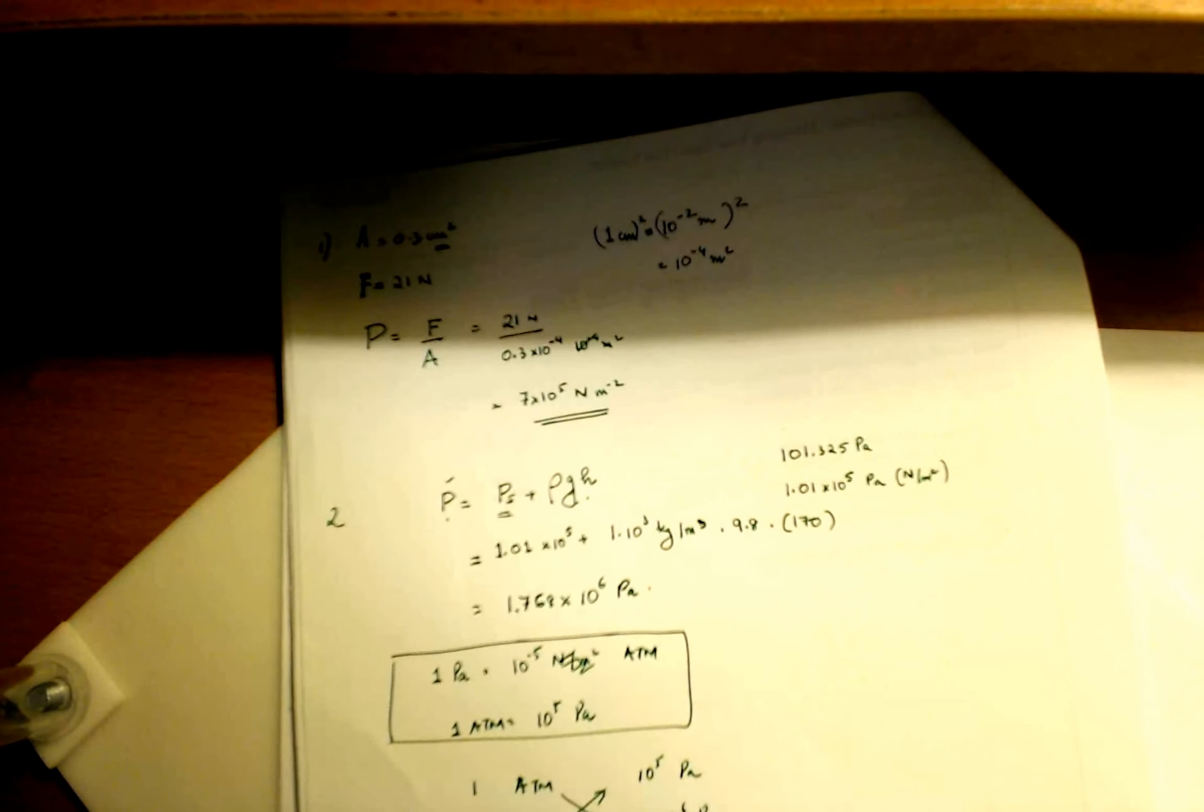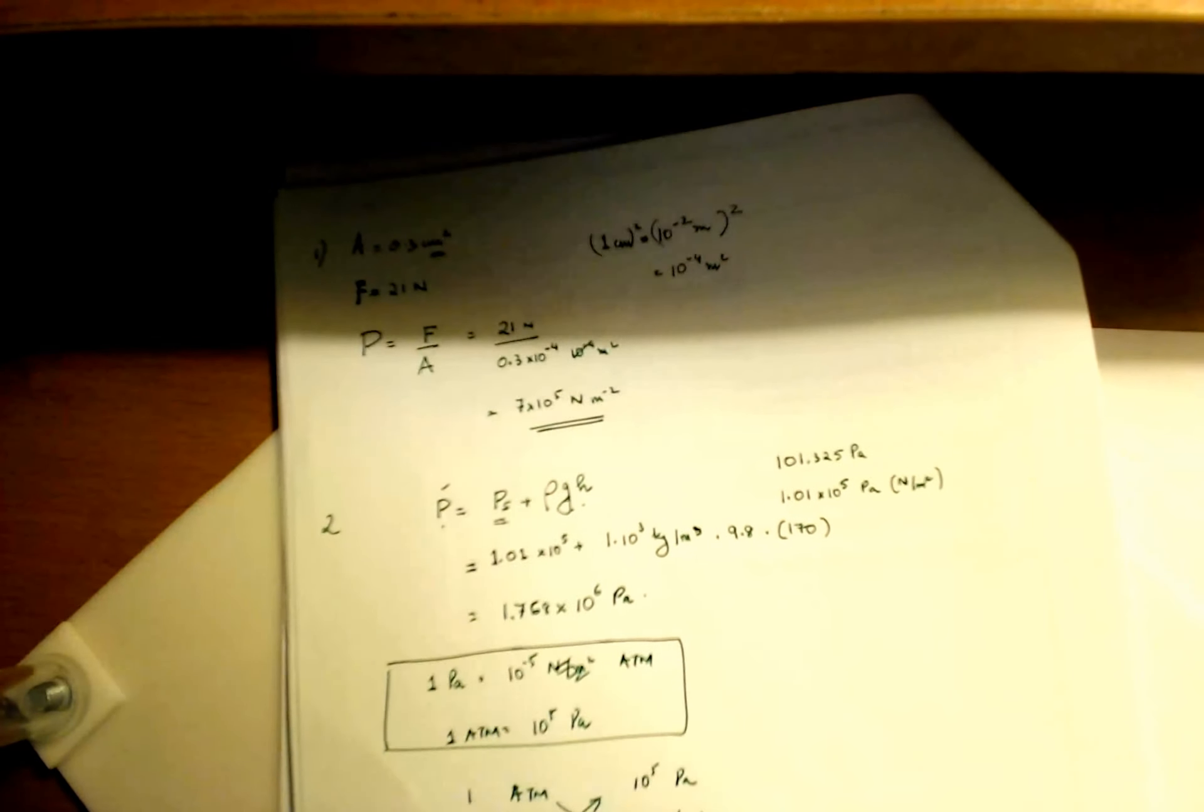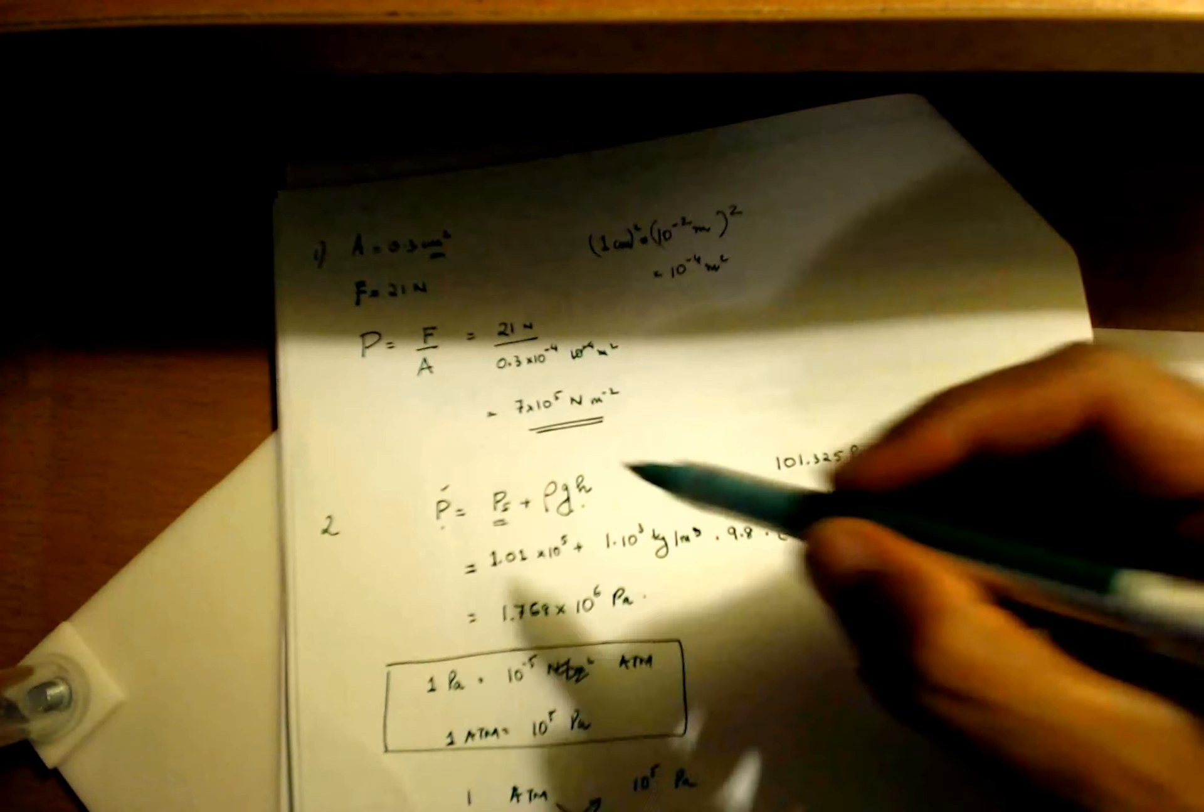I call this x, so x equals 1.x times 10 to the 5 equals 1 times this, so 1 times that is just that, x times that. So what is x? I divide both sides by 10 to the 5. I get 17.6 or 17.7 atmospheres.